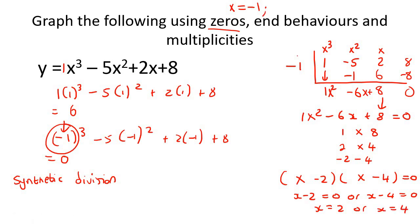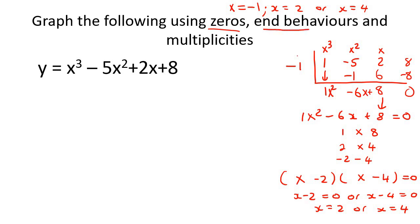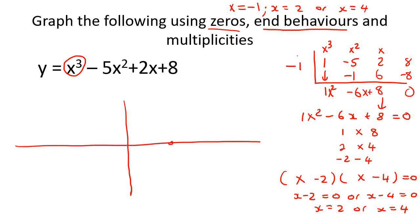Now we have all our zeros: x = 2, x = 4, and x = -1. This makes sense because the fundamental theorem of algebra tells us a cubic should have three answers. We can fill those in on the graph.